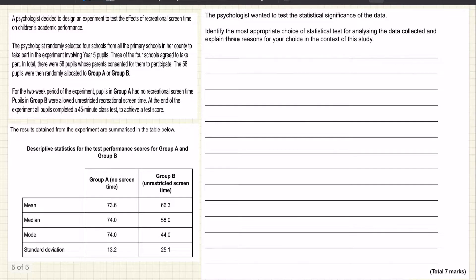So this is a 7 marker, and you are going to get 1 mark for naming the correct statistical test, or for naming an appropriate statistical test, and a further 6 marks for saying why you are going to choose that test.